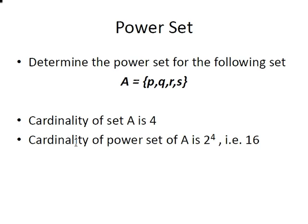So an important point to start off with: the cardinality of set A is 4, that is to say there are four elements in set A. So the cardinality of the power set of A is going to be 2 to the power of 4, i.e. 16.